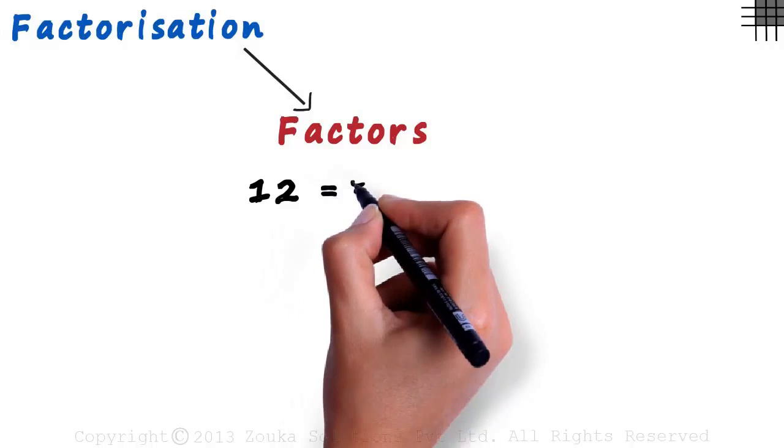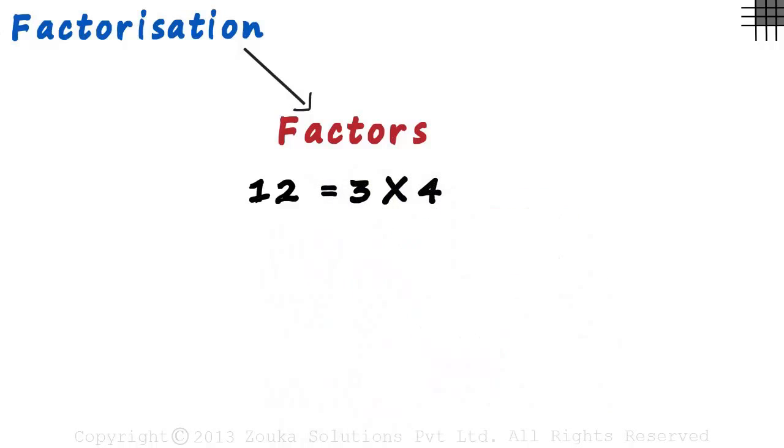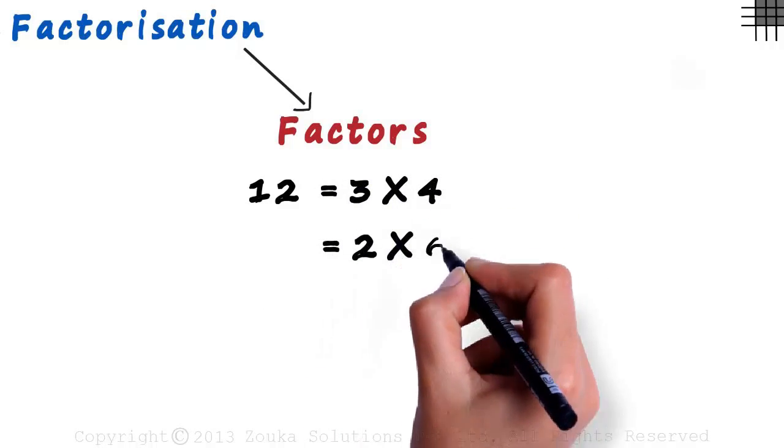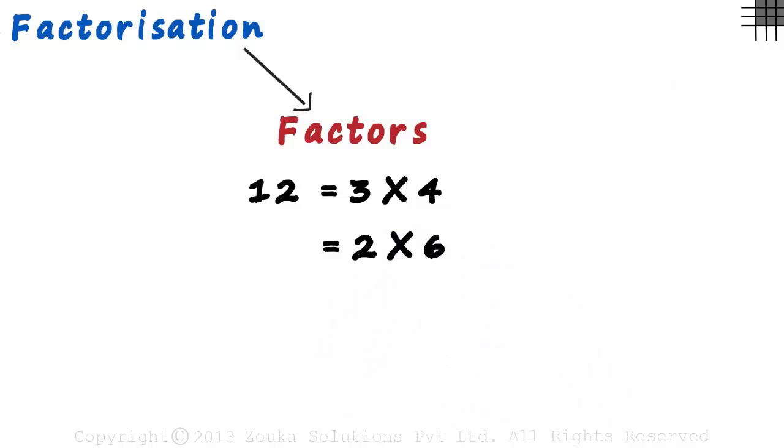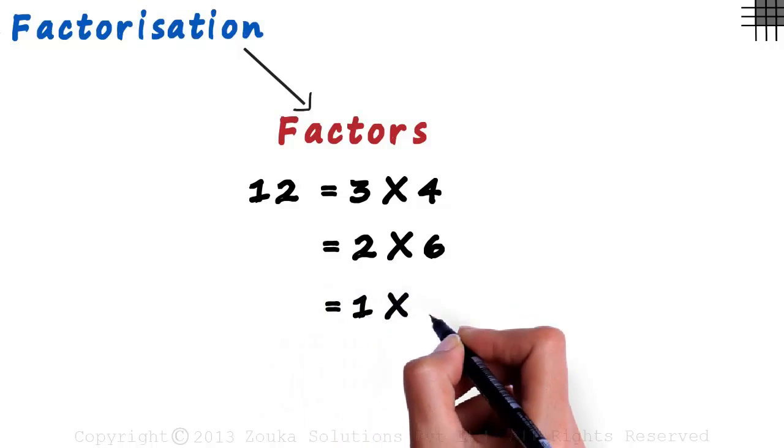It can be written as 3 times 4. It can also be written as 2 times 6. Is that it? Don't forget the easier product, the product of 1 with the number itself.